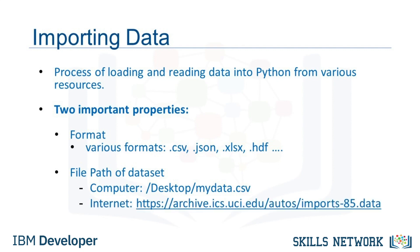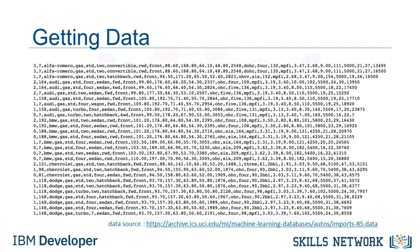In our case, we found a dataset of used cars which was obtained from the web address shown on the slide. When Jerry entered the web address in his web browser, he saw something like this. Each row is one data point. A large number of properties are associated with each data point. Because the properties are separated from each other by commas, we can guess the data format is CSV, which stands for Comma Separated Values.